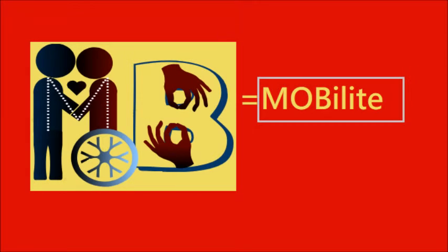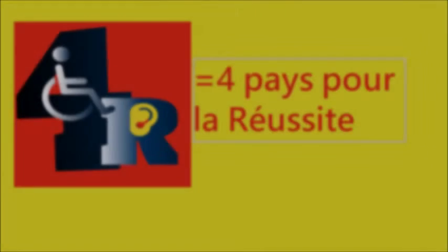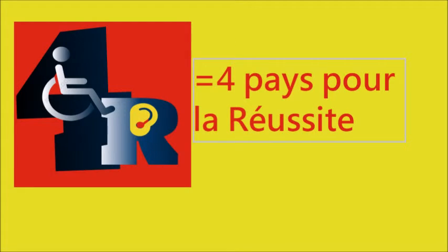Mob is for Mobility. Here we see a couple in love, one of them in a wheelchair, and the mark of sign language. 4R in addition means 4 countries for success.